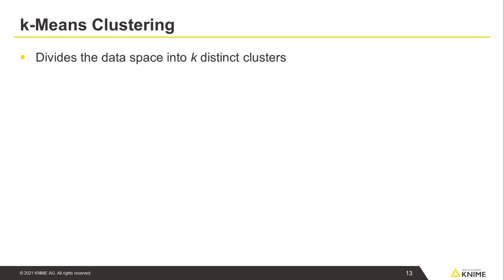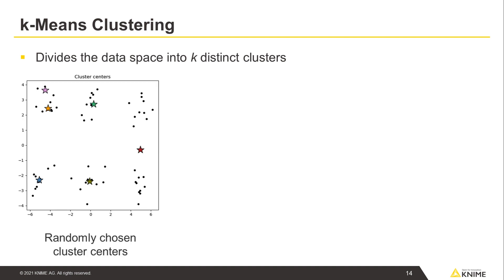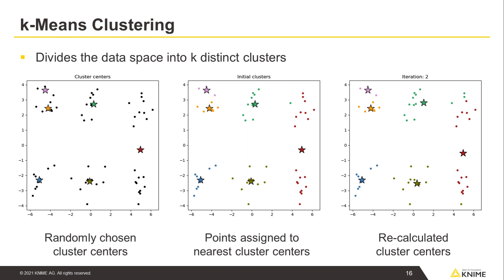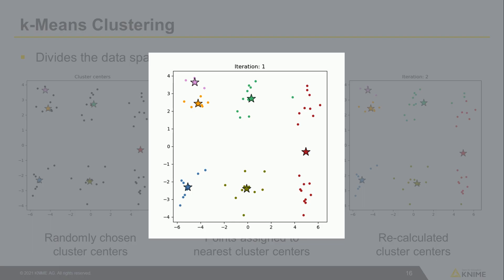K-means clustering is perhaps the most popular clustering algorithm. It is a partitioning method dividing the data space into K distinct clusters. It starts out with randomly selected K cluster centers, and all data points are assigned to the nearest cluster centers. Then the cluster centers are recalculated as the centroids of the newly formed clusters. The data points are reassigned to the nearest cluster centers just recalculated. This process of assigning data points to the cluster centers and recalculating the cluster centers is repeated until the cluster centers stop moving.